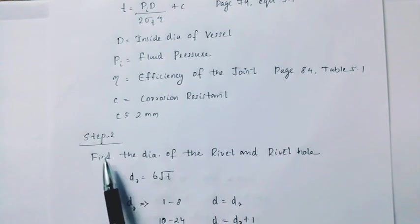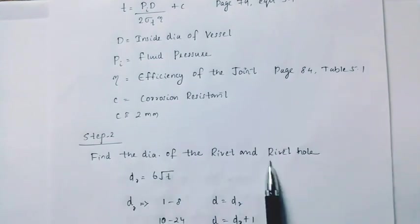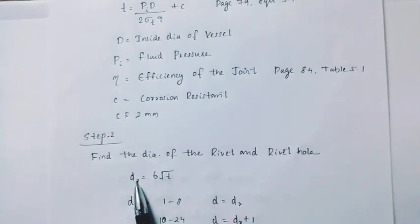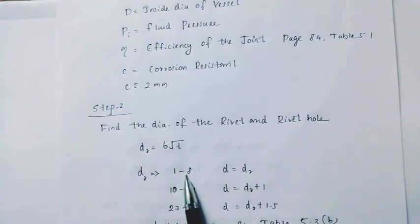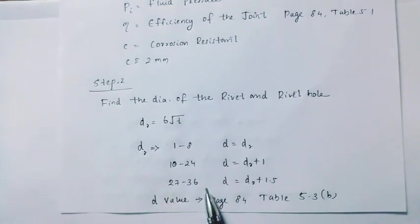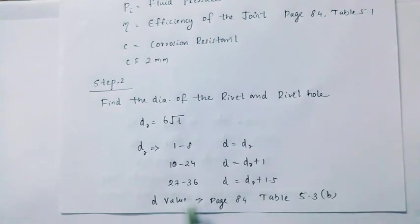Step 2. Find the diameter of the rivet. dr is equal to 6 root t. Then d equals 1 to 8, dr equals dr. dr equals 10 to 24, dr equals dr plus 1. d equals 27 to 36, dr equals dr plus 1.5. d value page number 84, table 5.3b.